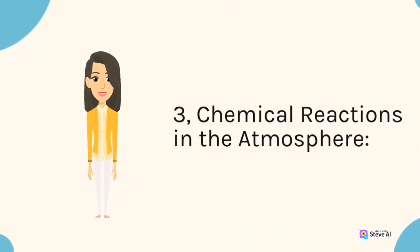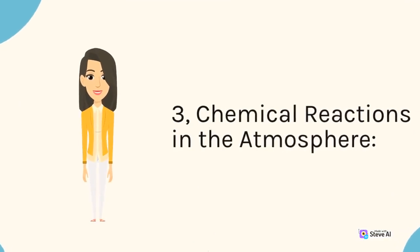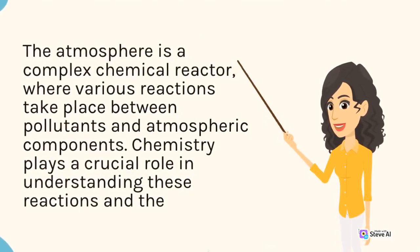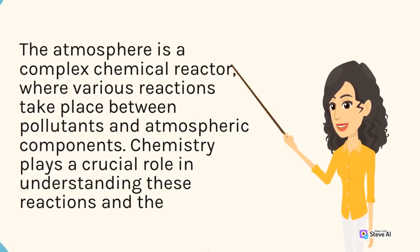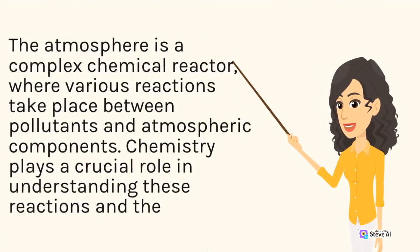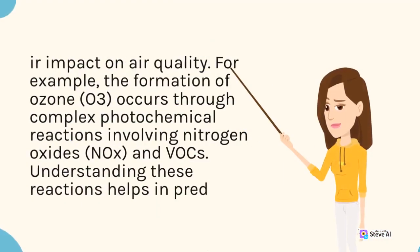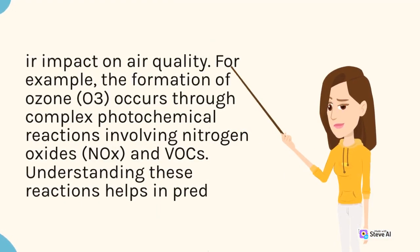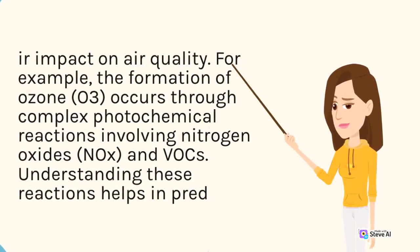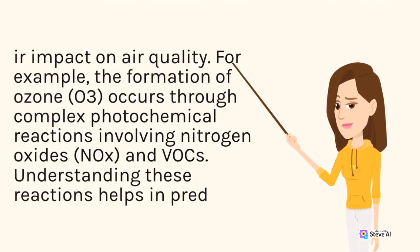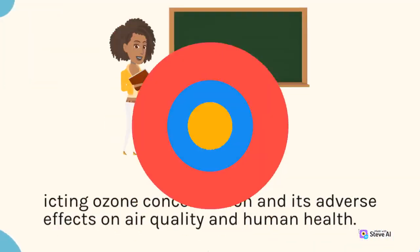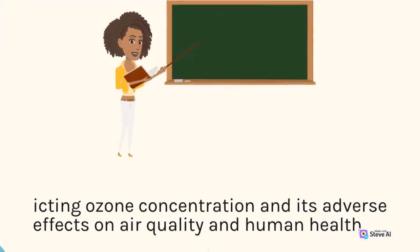3. Chemical Reactions in the Atmosphere. The atmosphere is a complex chemical reactor, where various reactions take place between pollutants and atmospheric components. Chemistry plays a crucial role in understanding these reactions and their impact on air quality. For example, the formation of ozone (O3) occurs through complex photochemical reactions involving nitrogen oxides (NOx) and VOCs. Understanding these reactions helps in predicting ozone concentration and its adverse effects on air quality and human health.